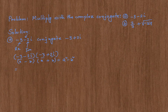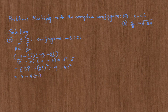Using difference of squares, it's going to be negative 3 whole squared minus 2i whole squared. Negative 3 whole squared is 9, minus 2i whole squared is 4i squared. We know that i squared is negative 1, so 9 minus 4 times negative 1 gives us 9 plus 4, which is 13.